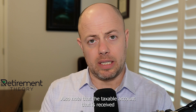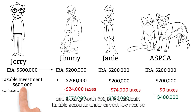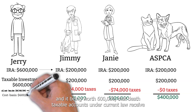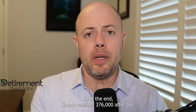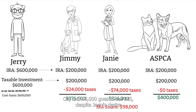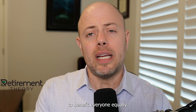Note that the taxable account — despite only having $100,000 invested into it and being worth $600,000 at death — receives a step-up in cost basis under current law, so beneficiaries receive it without any income tax. In the end, Jimmy receives $376,000 after tax, Janie $326,000, and the ASPCA $400,000, while $98,000 goes to the IRS — despite Jerry's desire to benefit everyone equally.